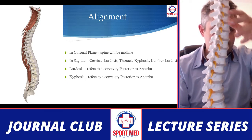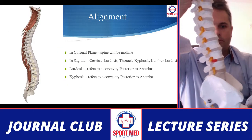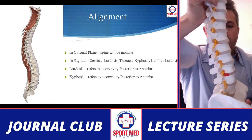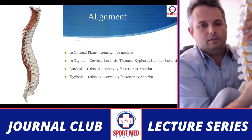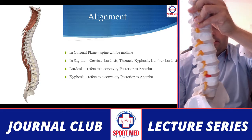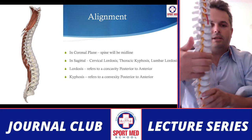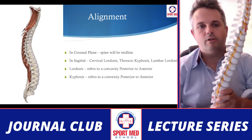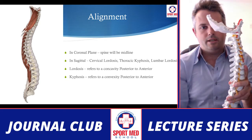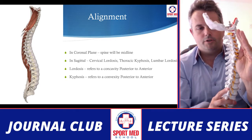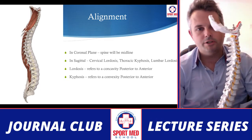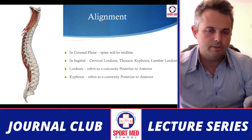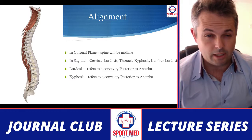When we take a look at the spine sagittally — from the side — there are normal curvatures that occur. In the lumbar spine we have a lordosis, which is essentially a concavity of the lumbar spine from posterior to anterior. The thoracic spine has a kyphosis, which is a convexity posterior to anterior, and the cervical spine has a natural lordosis. Conditions can increase or decrease those curvatures — for example, Scheuermann's may increase the convexity of a kyphosis in the thoracic spine.